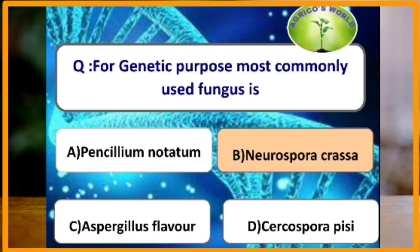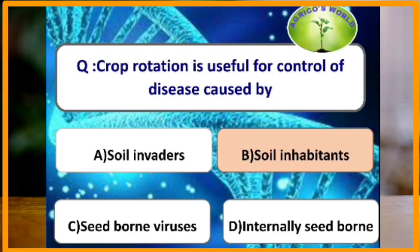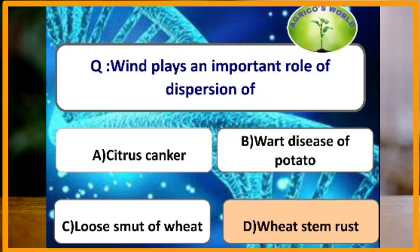The most commonly used fungus for genetic purposes is Neurospora crassa, which belongs to Ascomycetes. Crop rotation is useful for the control of which diseases? Crop rotation is used for the control of only soil inhabitants, but not invaders.